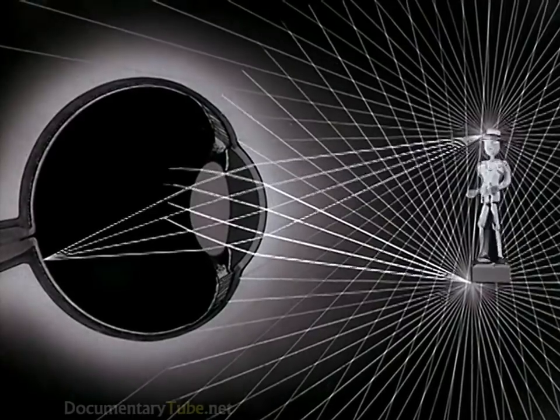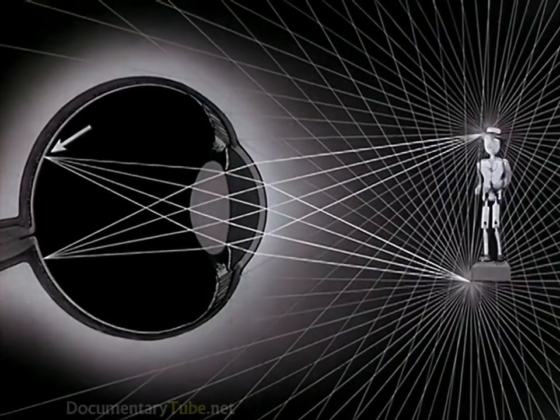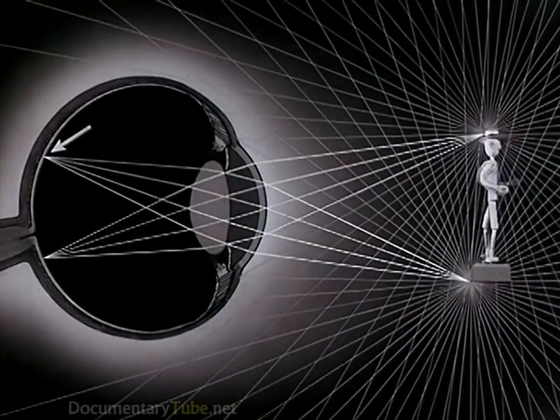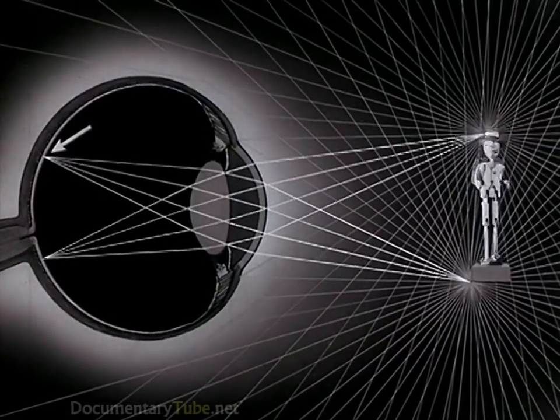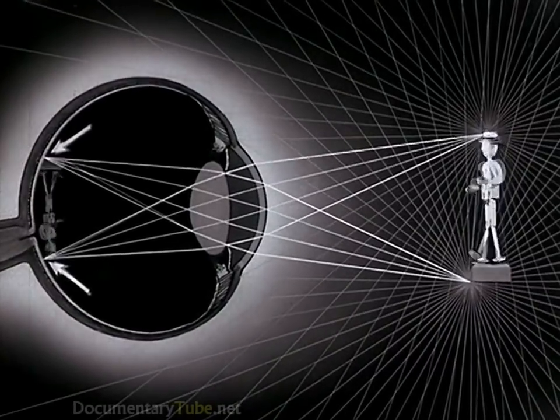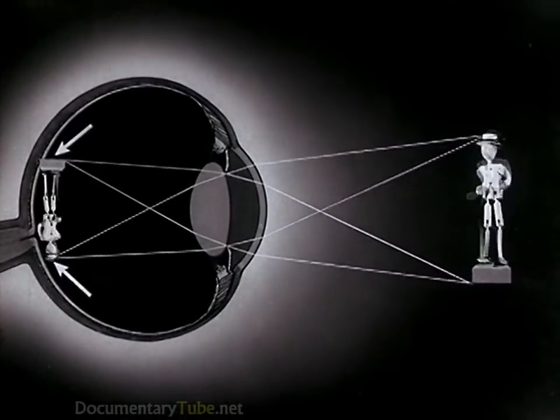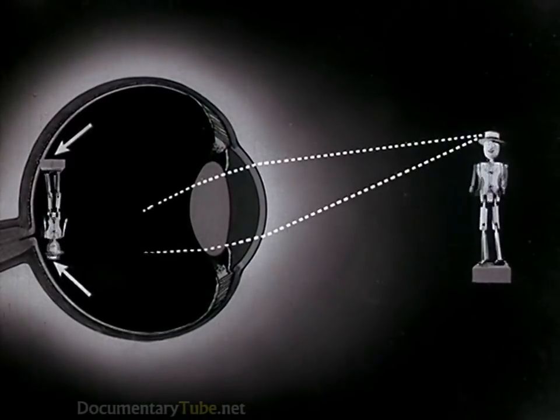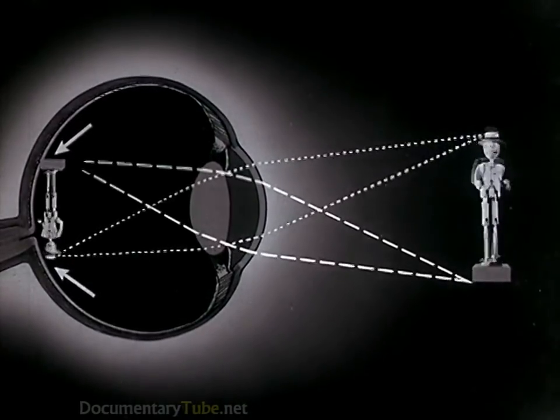From every other point on the object, the light is focused at a corresponding point inside the eye. In this way, a clear image of the object is built up. Because the rays cross, the image is upside down.